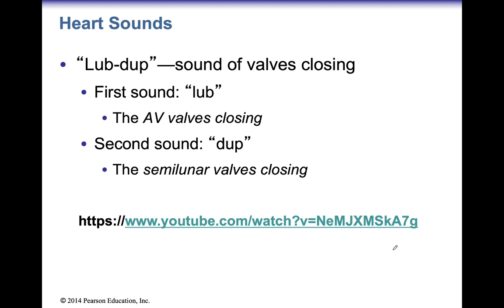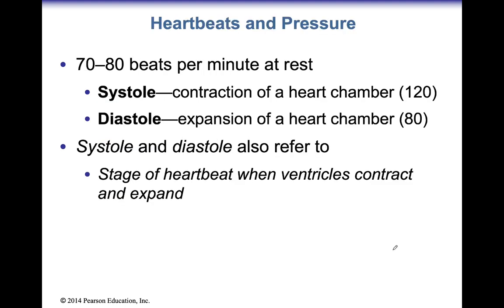You can use the provided link to watch a YouTube recording of actual heart sounds. When they take heartbeats and pressure, your systole and diastole is what they're looking for. The number of beats is usually around 70 to 80 for an average human. If you're an Olympic athlete, it could go as low as about 50 when you have a nice, healthy, strong heart.